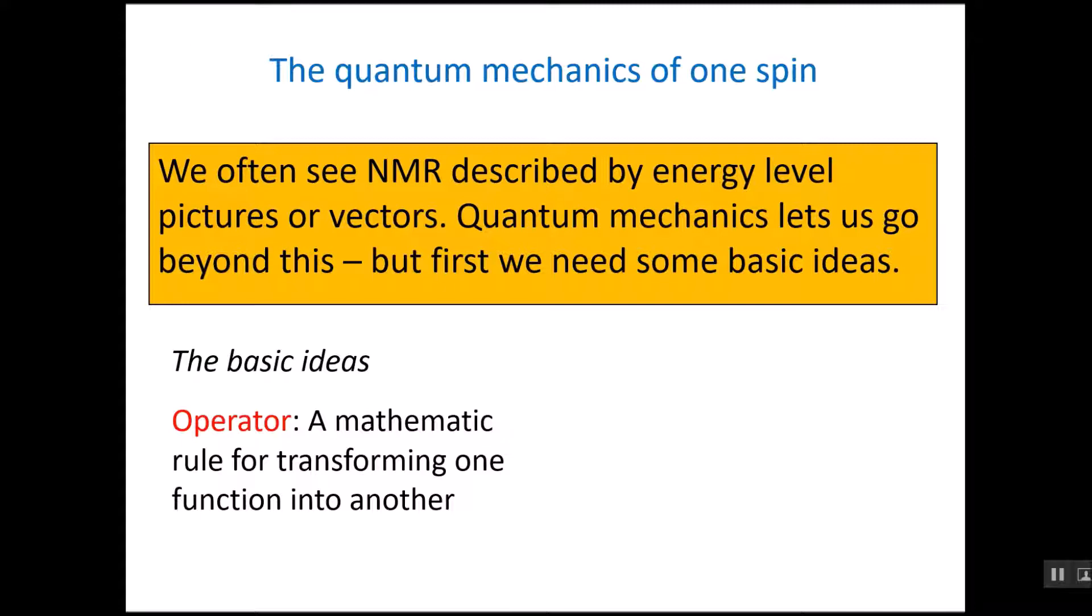One of the first ideas for NMR is this idea of an operator. An operator is just a mathematical rule for transforming one function into another. So for example, an operator might be the derivative with respect to x of a function. If we operate on x squared plus three e to the x with the differential operator, we would get two x plus three times e to the x as the transformed product.